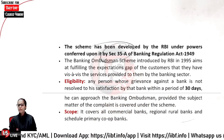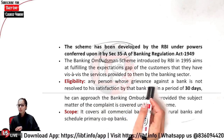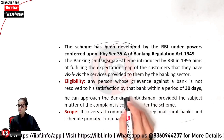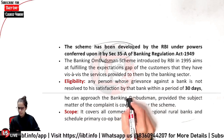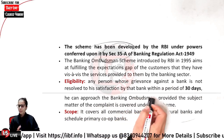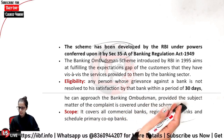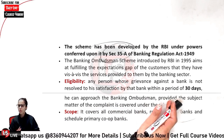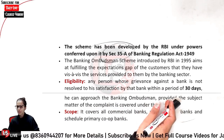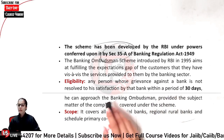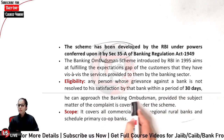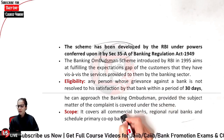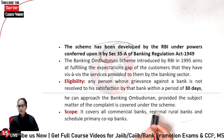What is the eligibility? Any person whose grievance against a bank is not resolved to his satisfaction by that bank within a period of 30 days — you have to wait 30 days first. Can you directly go to the Ombudsman without waiting? The answer is no. You can approach the Banking Ombudsman provided the subject matter of the complaint is covered under the scheme.